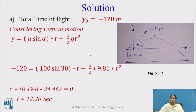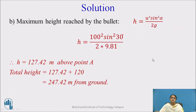This 127.42 meters is measured from point A. But the bullet strikes 120 meters below point A, so the maximum height should be calculated from point B. Therefore, the total height is 127.42 + 120 = 247.42 meters from the ground where the bullet strikes.